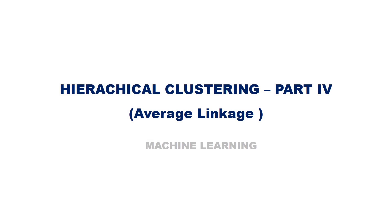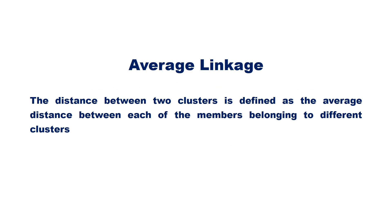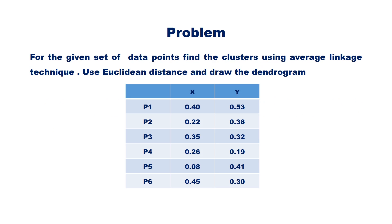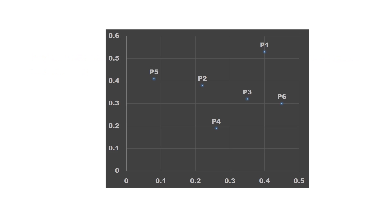In this video, let us discuss hierarchical agglomerative clustering using average linkage method. In the previous video, we have seen that in average linkage, the distance between two clusters is defined as the average distance between each of the members belonging to different clusters. Let us see an example: for the given set of data points, find the clusters using average linkage technique, using Euclidean distance, and draw the dendrogram.